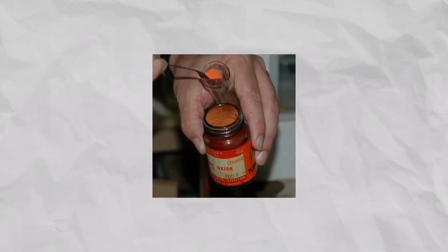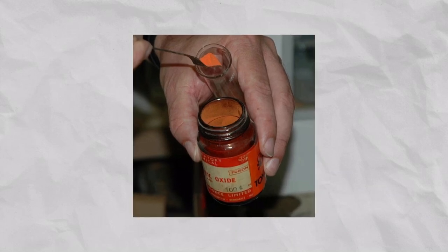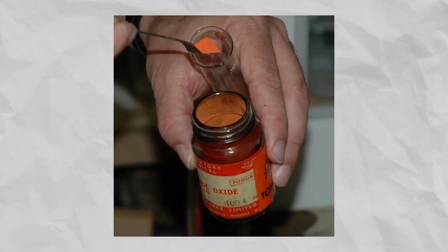Welcome back everyone, today we are going to make mercury 2 oxide, which can be used as a precursor to make basically any other mercury 2 salt.